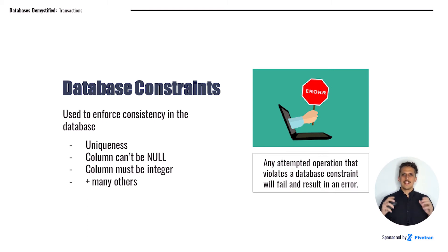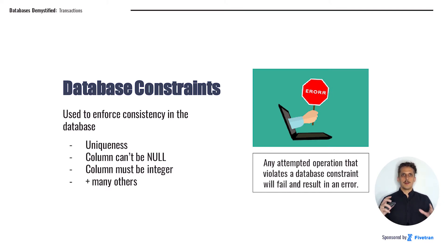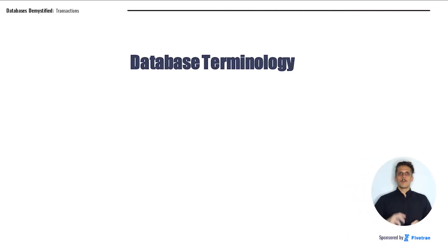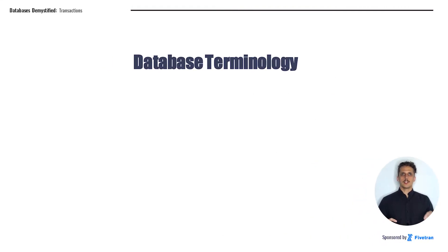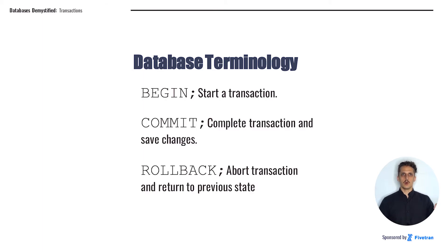Any operation that violates a database constraint will result in an error. The database will simply refuse to perform that operation — it will prevent you from inserting a null value into a non-null column, or adding a duplicate value into a unique column. One more note on terminology: when we're talking about transactions, we use three very important commands — BEGIN, COMMIT, and ROLLBACK.